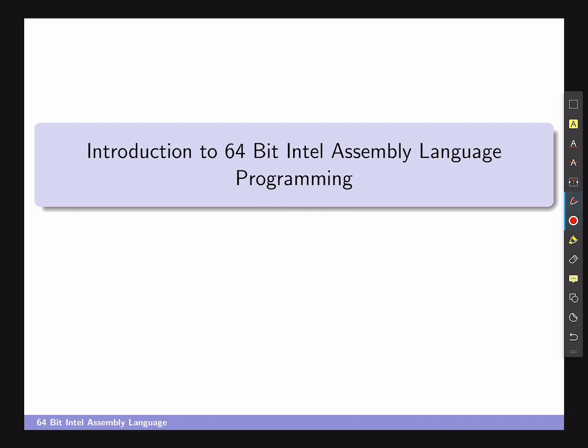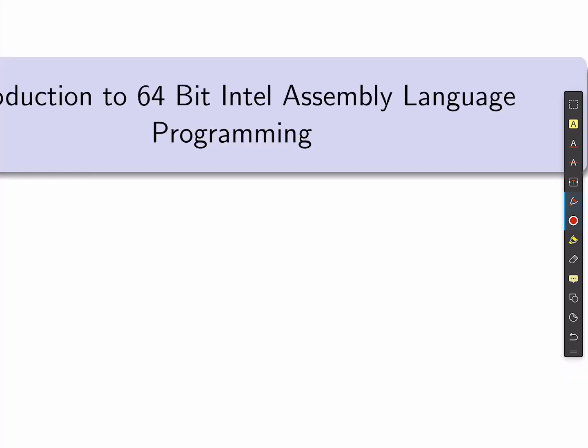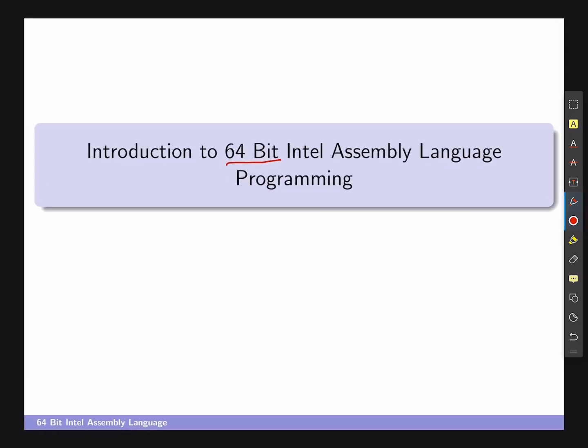The first couple of things to keep in mind about the assembler programming we're going to discuss is that it's rather specific in nature — we're focusing on 64-bit assembler programming and specifically Intel assembler programming. Intel and AMD both use the same base architecture, and we're focusing on x86, which is basically the standard architecture of the von Neumann machines you're most used to.